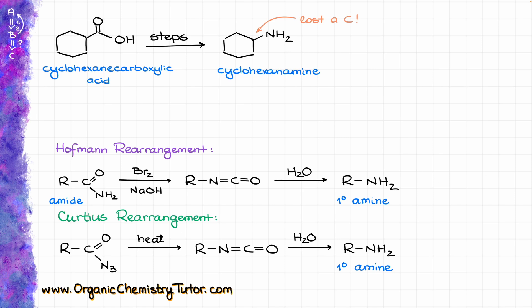But enough with my rants. Both these reactions, both these rearrangements make a primary amine and they lose a carbon atom, which is exactly what we are going to be looking at in this case. And as we can see, both reactions are dealing with the derivatives of carboxylic acids.